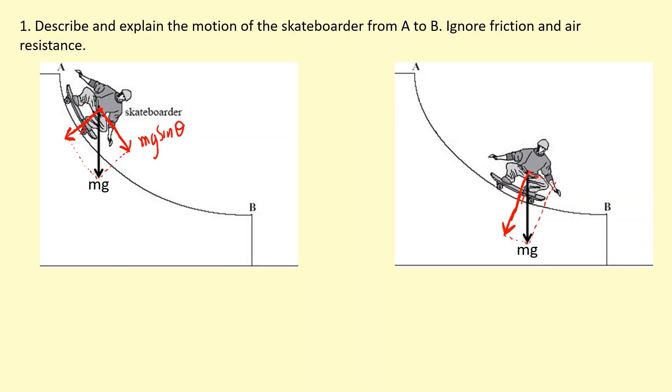So his acceleration along parallel to the slope has decreased. So at the beginning at A, there's going to be large acceleration causing him to go down the slope, speed up down the slope. But as he goes towards B, that component is decreasing—the parallel component to the slope decreases—and eventually he won't be accelerating at all.